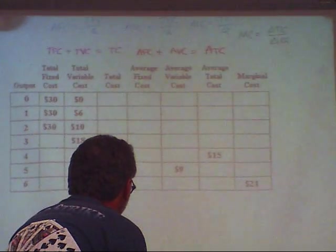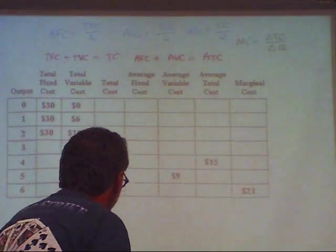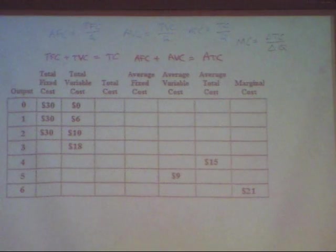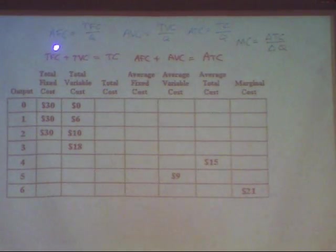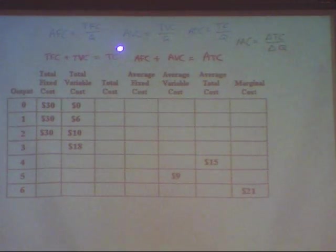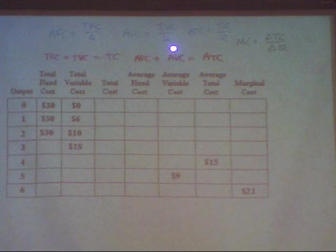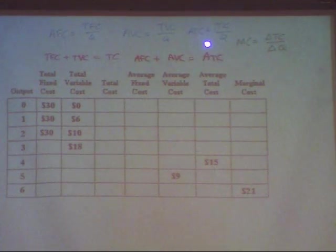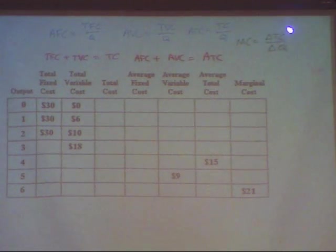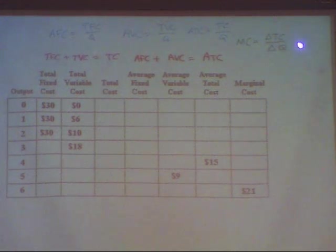The other things you need to know are how to calculate the averages and how to calculate the marginal. The average fixed cost is the total fixed cost divided by the quantity produced. The average variable cost is the total variable cost divided by the quantity produced. The average total cost is the total cost divided by the quantity produced. The marginal cost (MC) is the change in the total cost divided by the corresponding change in the quantity.